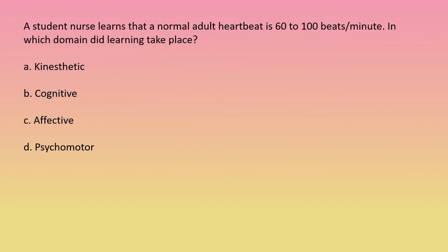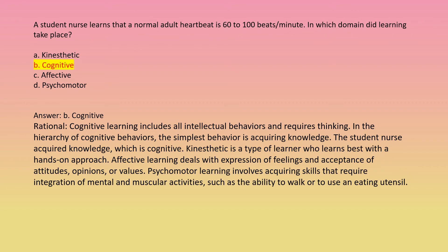A student nurse learns that a normal adult heartbeat is 60 to 100 beats per minute. In which domain did learning take place? A: kinesthetic. B: cognitive. C: affective. D: psychomotor. Answer: B, cognitive. Rationale: Cognitive learning includes all intellectual behaviors and requires thinking. In the hierarchy of cognitive behaviors, the simplest behavior is acquiring knowledge. The student nurse acquired knowledge, which is cognitive.